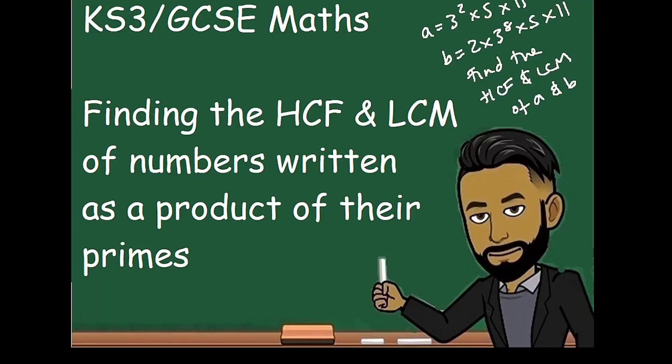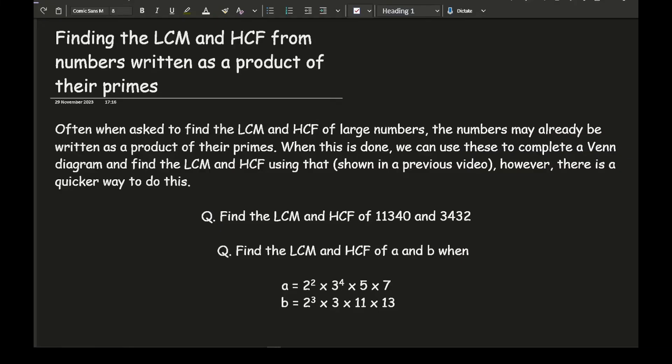Welcome everybody to this latest video on 162 Maths. In this video we'll be going over the KS3 GCSE Maths topic of finding the highest common factor and the lowest common multiple of numbers written as a product of their primes. Now often when asked to find the LCM and the HCF of large numbers, the numbers may already be written as a product of their primes.